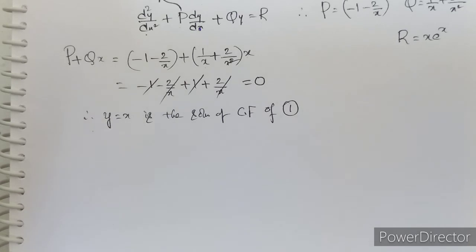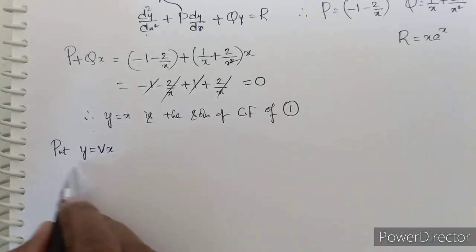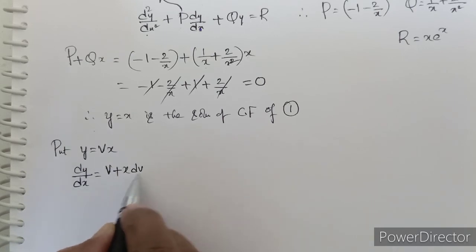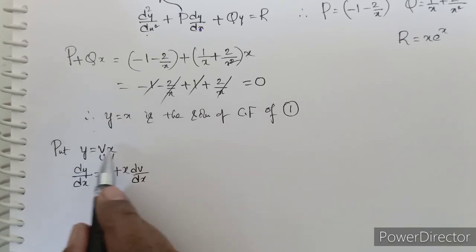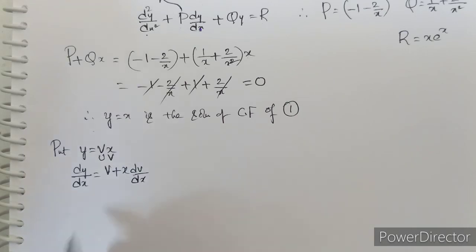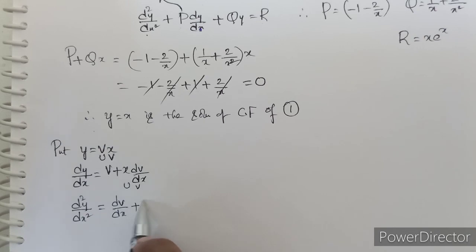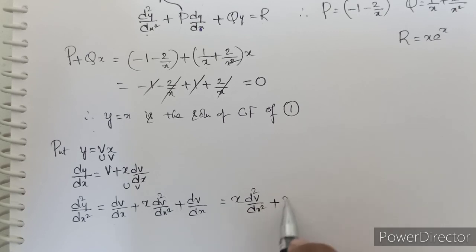To find the complete solution of equation 1, we put y = vx. Differentiating with respect to x using the product rule: dy/dx = v + x·(dv/dx). Differentiating again: d²y/dx² = dv/dx + x·(d²v/dx²) + dv/dx = x·(d²v/dx²) + 2·(dv/dx).